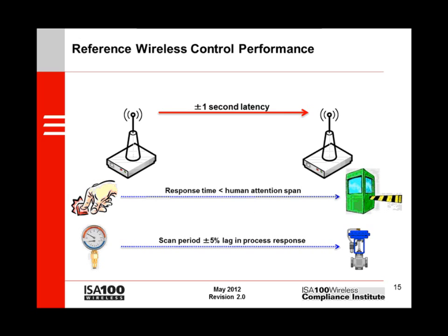On this slide, we suggest that something on the order of one-second latency end-to-end should be the basic performance reference for controls. Some applications can manage with less performance, and a few may need more. But we have found that one-second latency covers a reasonable range of applications without involving painful user trade-offs. For example, consider a human-in-the-loop control application, shown here as a person pressing a button. Normally, users want to see some feedback from their actions. It is well known that when a response time exceeds about two seconds, the user's attention will start to drift. So, we suggest one to two seconds end-to-end as a reasonable target for human-in-the-loop control.